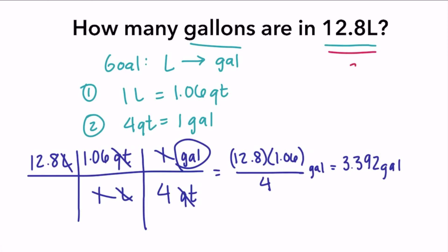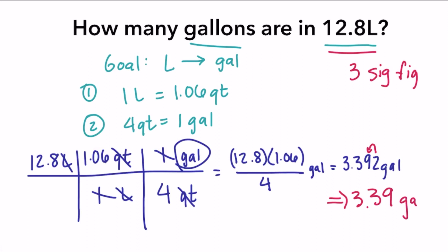Now let's check our significant figures. 12.8 has three significant figures, so we round our answer to three significant figures as well. The two rounds the nine, giving a final answer of 3.39 gallons.